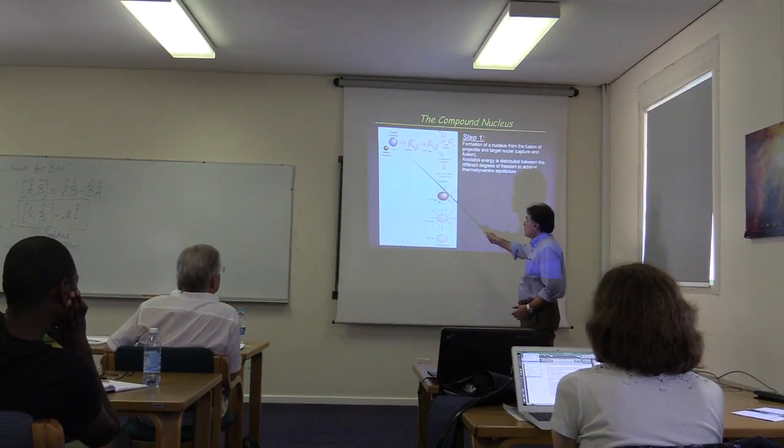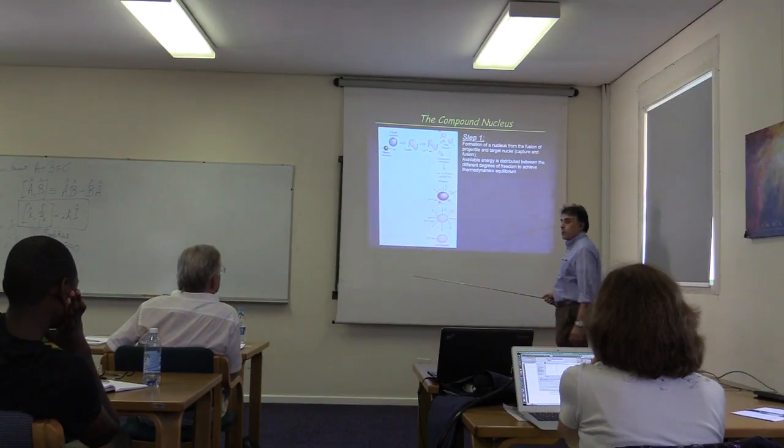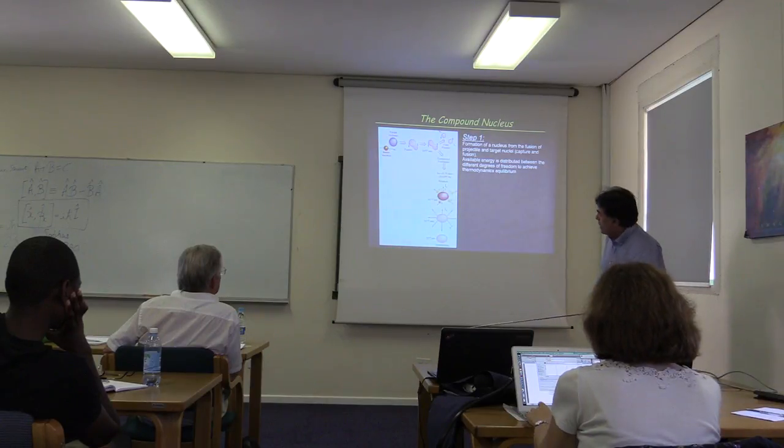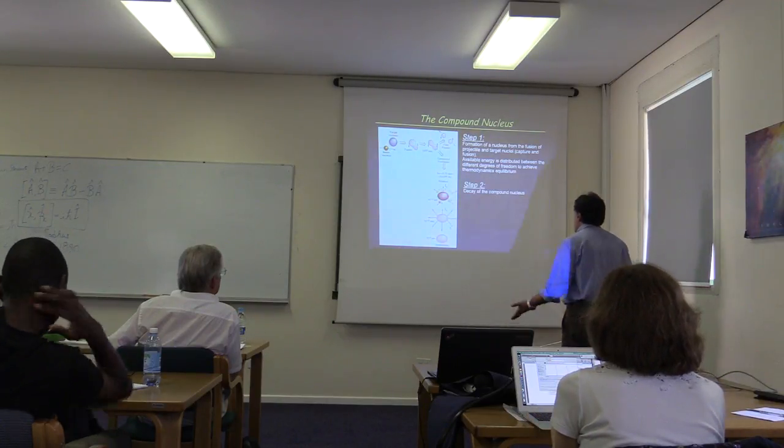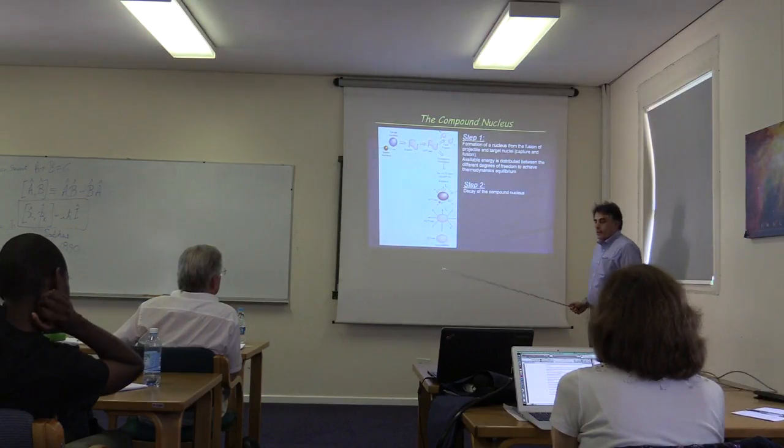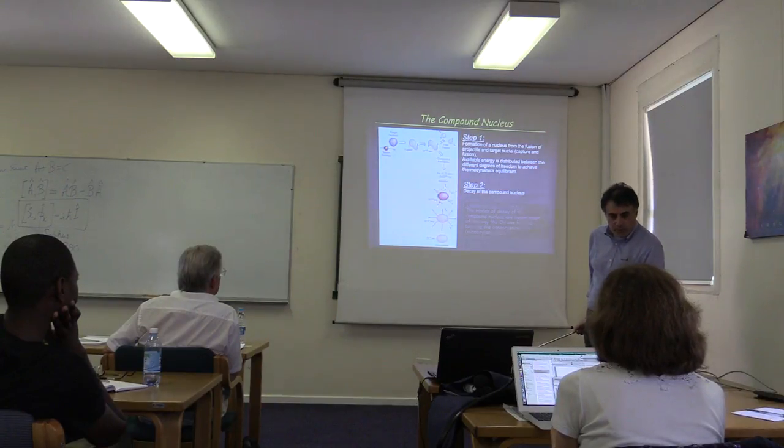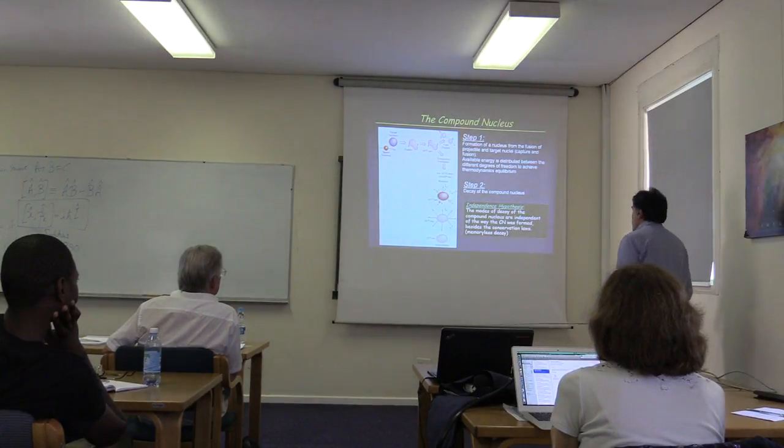We will have, first of all, a kind of composite system, which is a kind of equilibrated system. But what is the second step? Second step is the decay. So first, formation, fusing of the two systems. Second is decay.